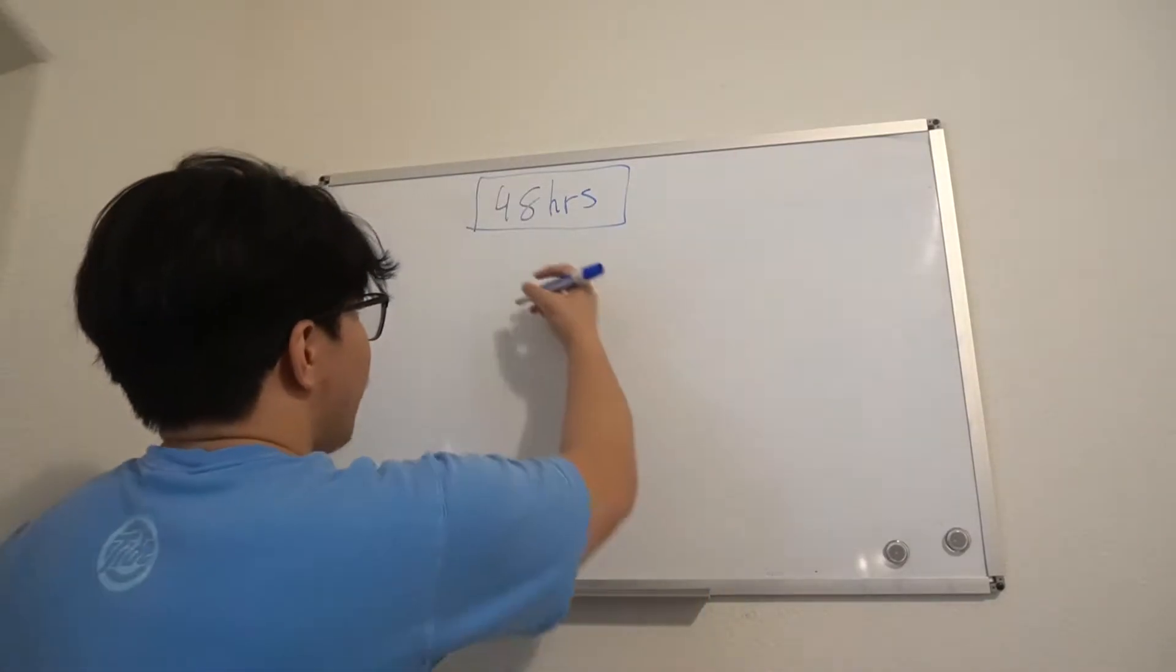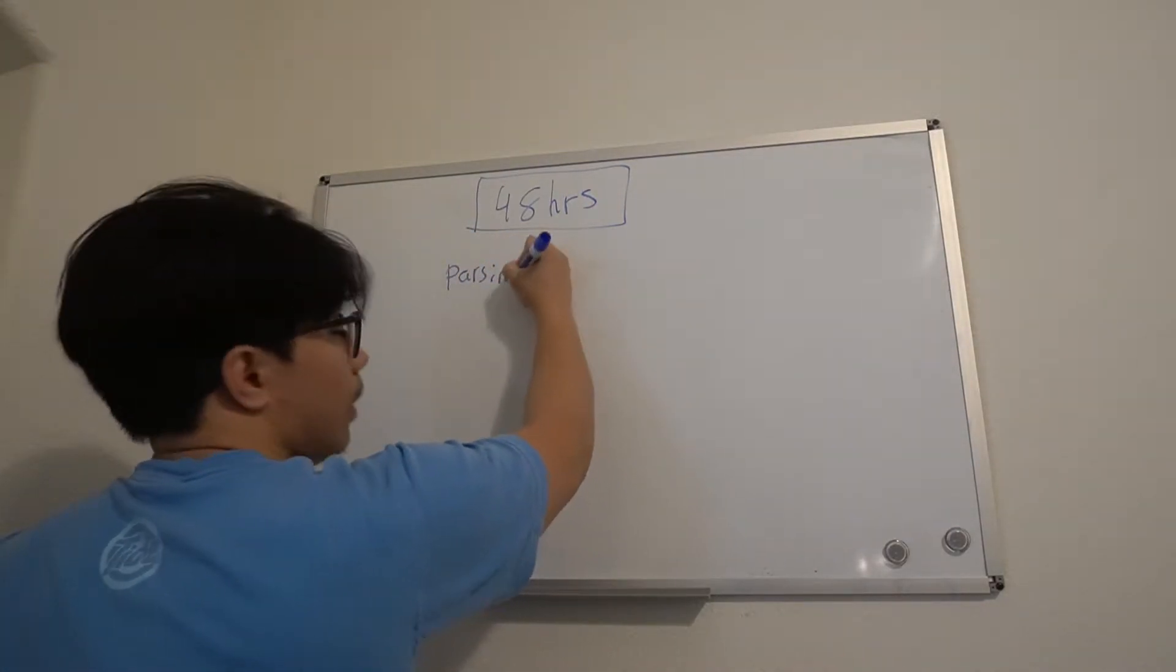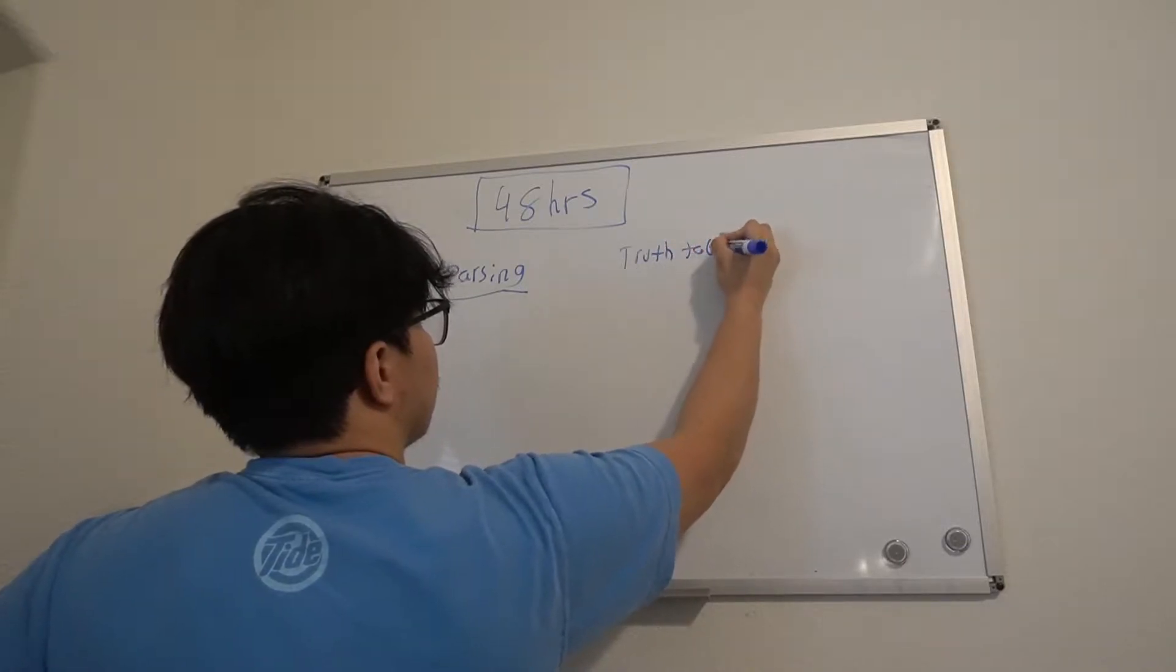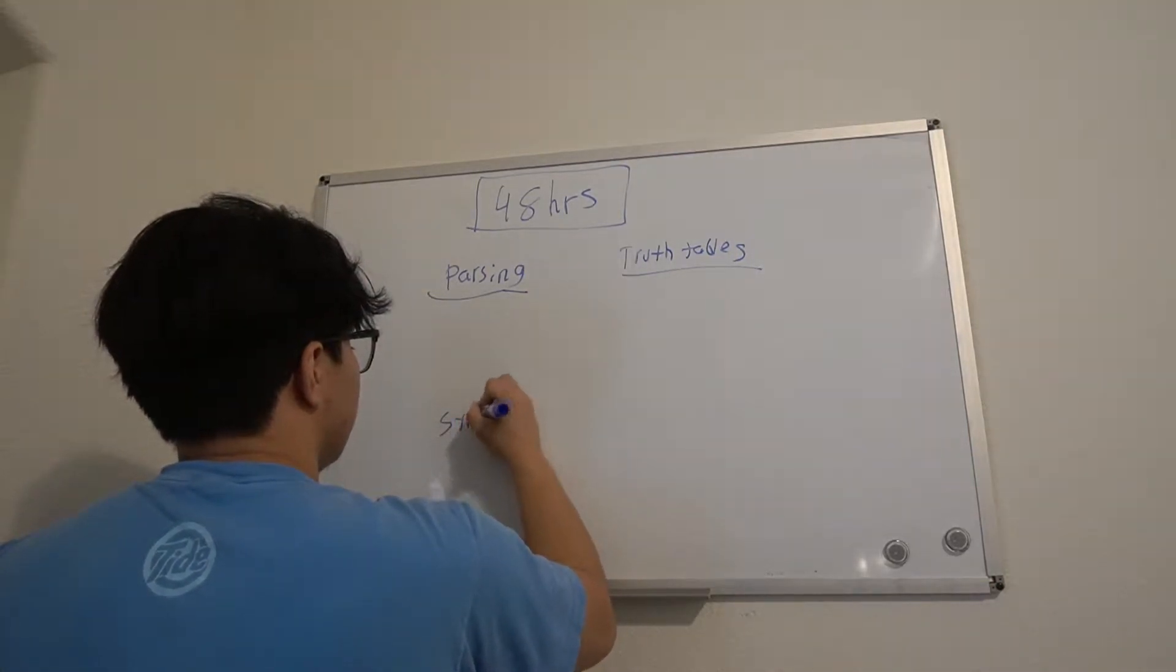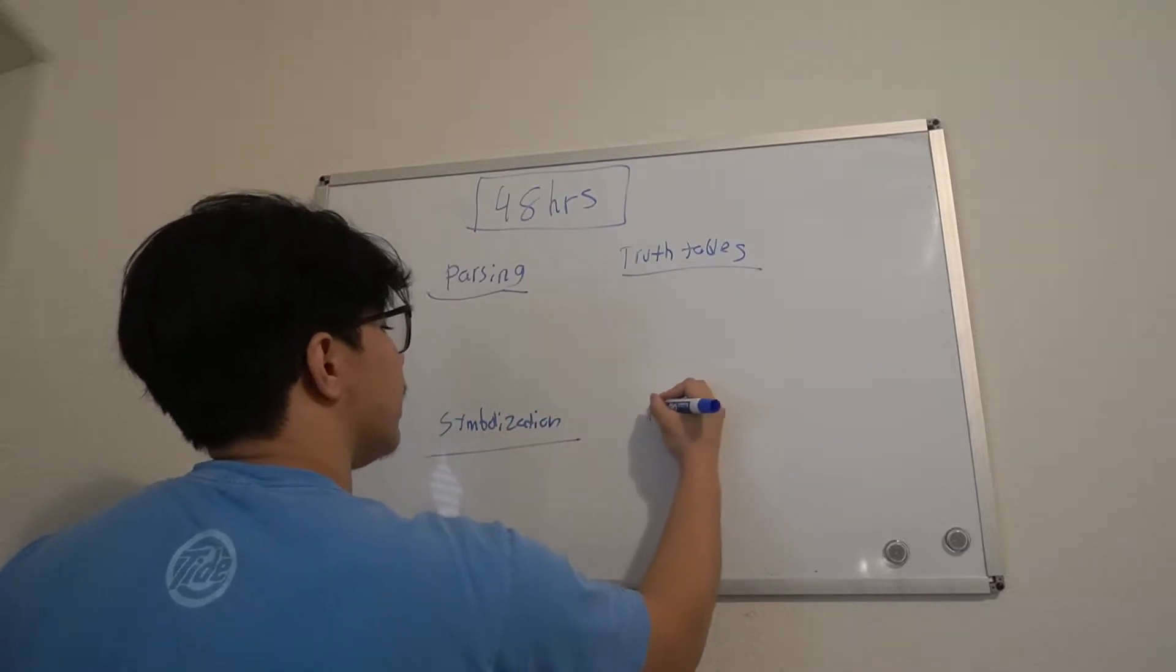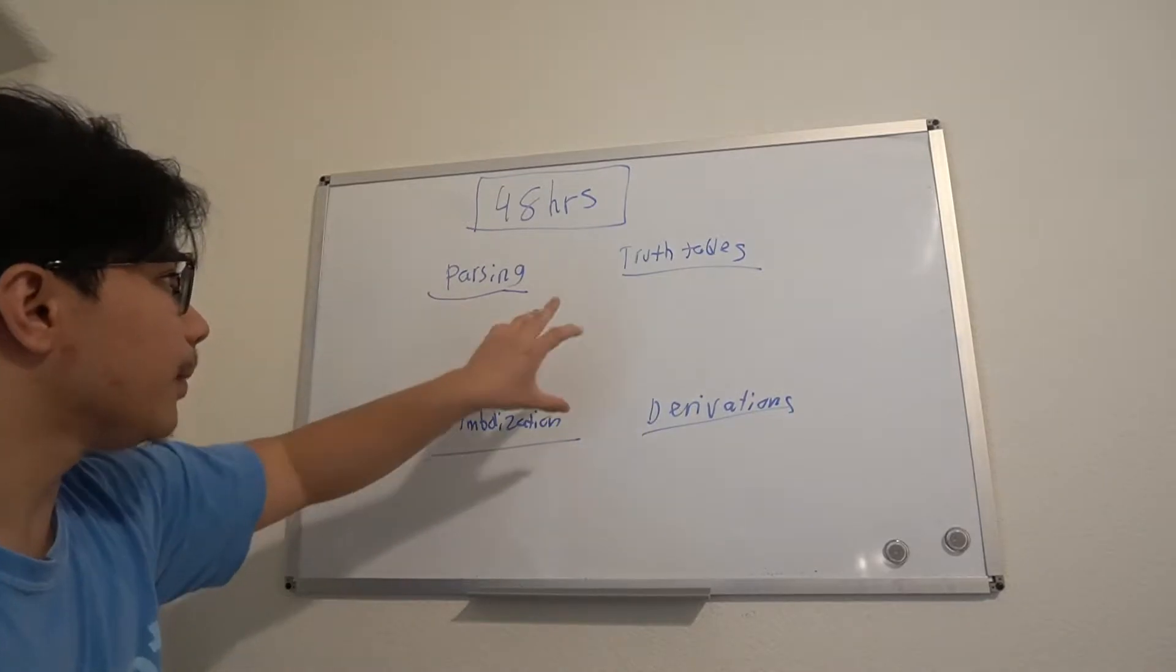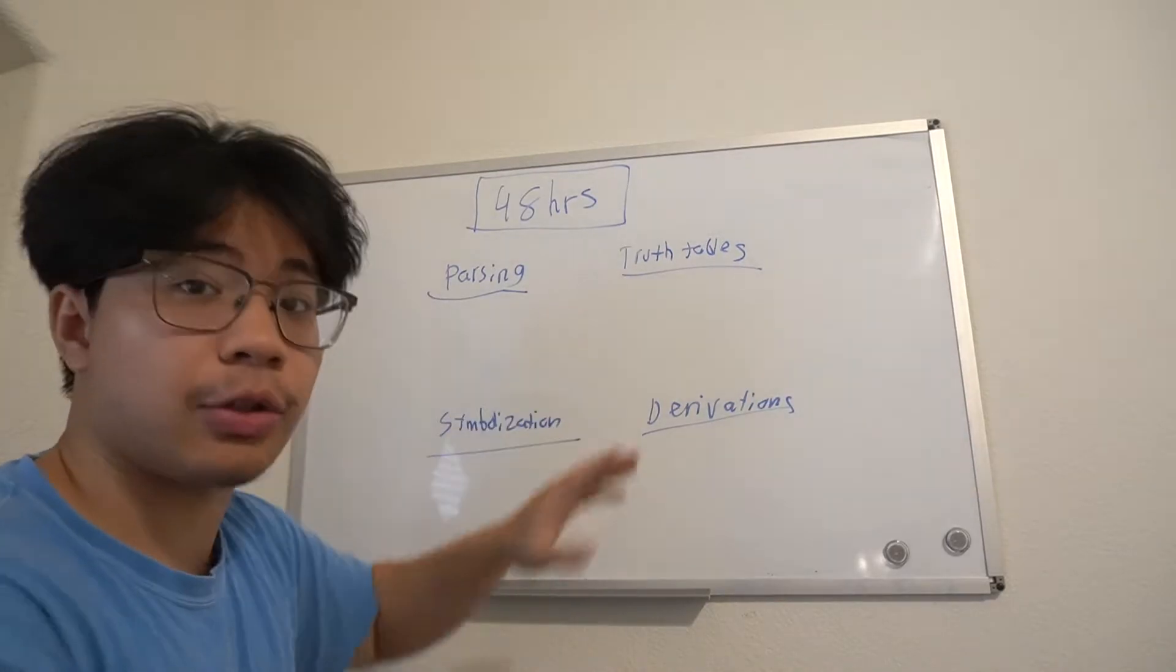Okay, this is for the logic class I hate so much. So I have the topics of parsing, that's one. And then truth tables, symbolization, and derivations. Apologize for my handwriting, it's not the best. Anyway, so pretty much I got to nail down these four topics within 24 hours. I mean, I'm sorry, within 48 hours. It should be really easy.